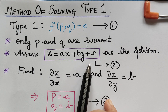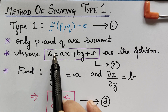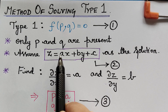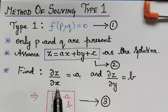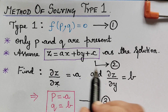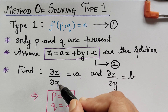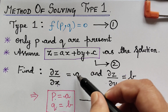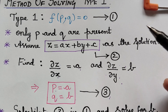Now, if you differentiate z with respect to x and y partially, you will find that you get a when differentiated partially with respect to x, and you get b when differentiated partially with respect to y. We know that dou z by dou x is p and dou z by dou y is q. So p is equal to a and q is equal to b, which gives us the third equation.